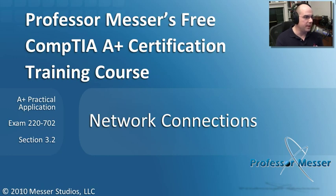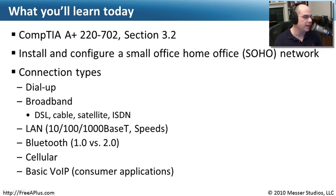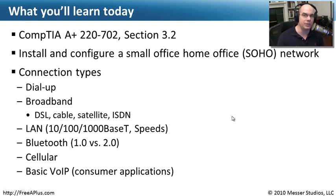Welcome to this module of Professor Messer's Free CompTIA A-Plus Certification Training Course on Network Connections. I'm James Messer. In this module, we'll look at the requirements from our CompTIA A-Plus 220-702, Section 3.2, where we need to install and configure a small office home office network — we call those SOHO networks. There are a lot of different connection types you might see in a small office network, so let's step through each one.